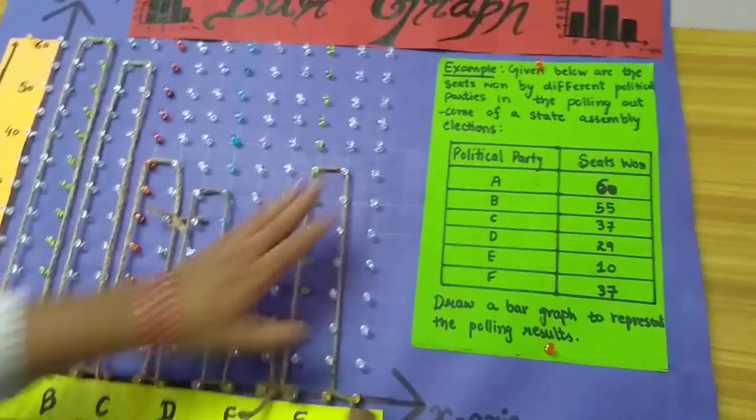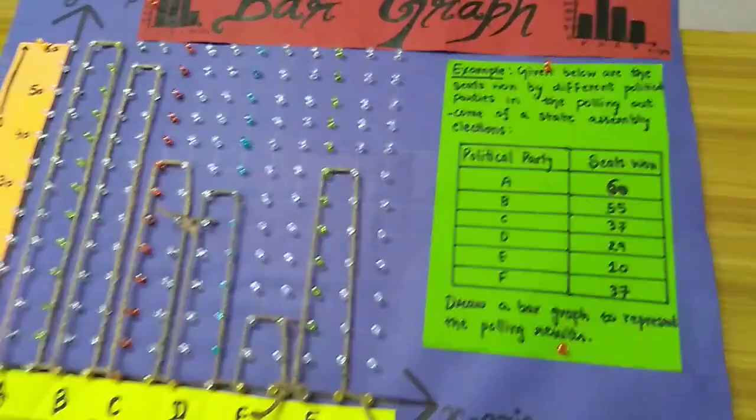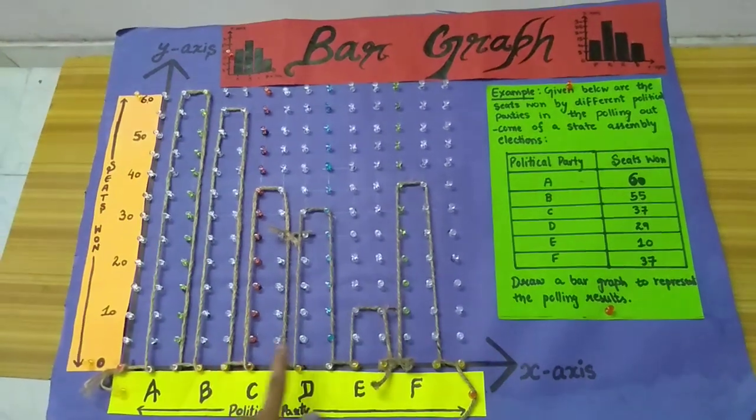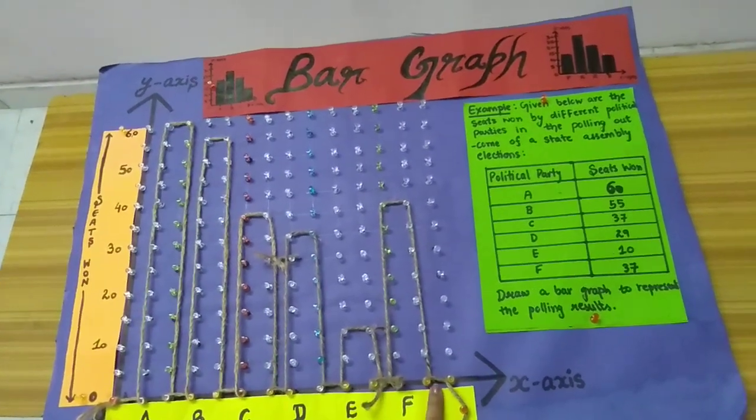So friends, in this way, you can draw a bar graph. Here I have different sections showing my seats. Thank you friends.